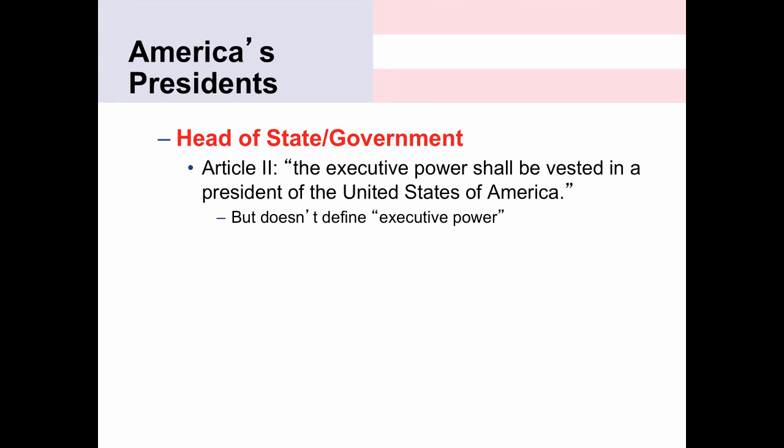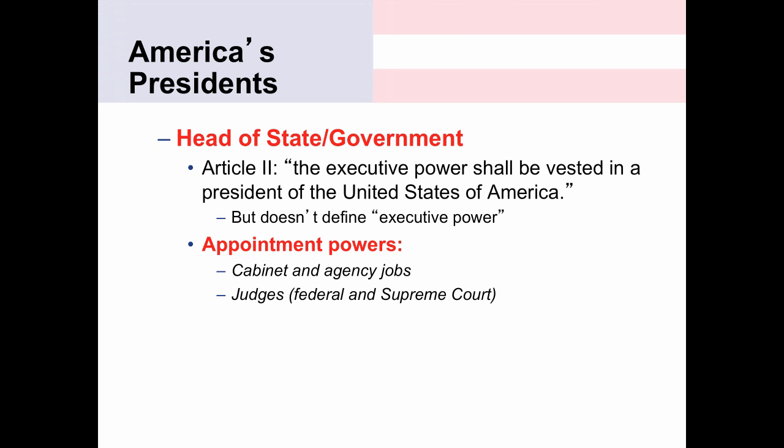What are some of the powers listed in the Constitution to the presidency? First is appointment powers. The president can appoint members of the cabinet or members of agencies, the secretary of state, the head of the Justice Department, and federal and Supreme Court judges. But both of these are limited by the Senate's advice and consent—any nominee the president puts forth, the Senate has to affirm or vote in favor of. So the presidential powers given by the Constitution are somewhat limited.